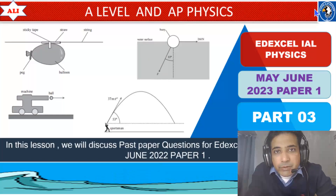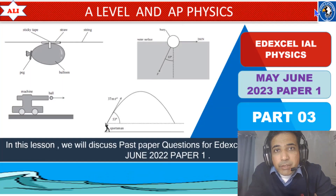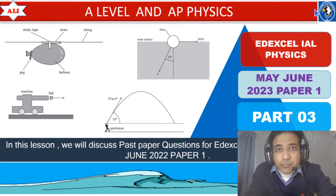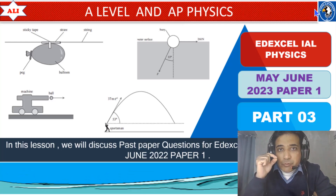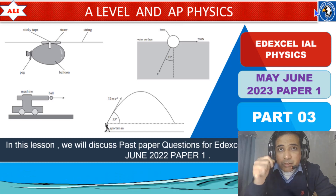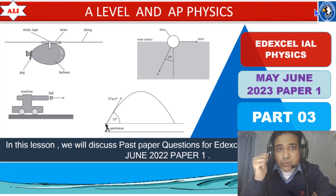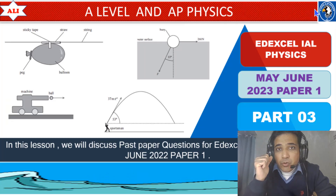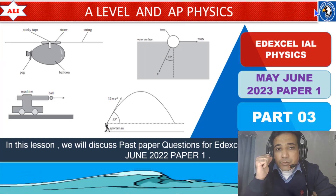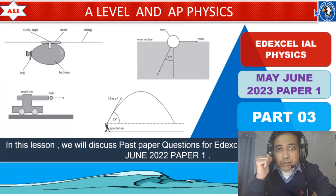Welcome to A-level and AP physics. In today's lesson we will discuss past paper questions from May/June 2020, Theory Paper 1. We will start from question 14 and discuss some important questions about momentum and forces. As always, we will discuss these questions in detail so you can improve your conceptual understanding and have a better understanding of these questions. Let's study together and improve together.